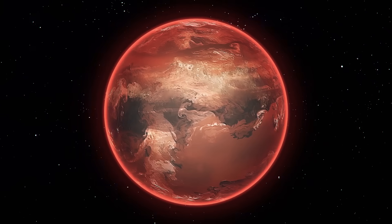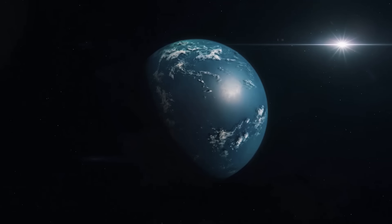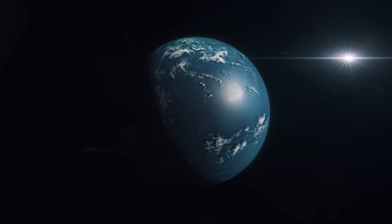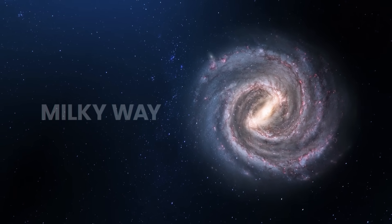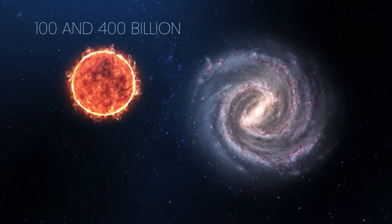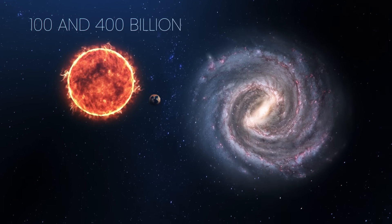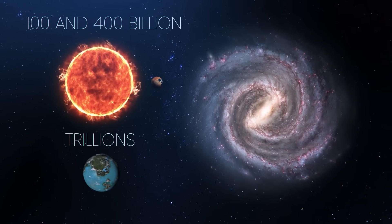After going through all the data Kepler collected, those 300 million rocky planets could be capable of supporting liquid water on their surface. This is just a rough estimate as there are between 100 and 400 billion stars in the Milky Way, and every one of those stars probably hosts at least one planet. That means there are likely trillions of planets out there.